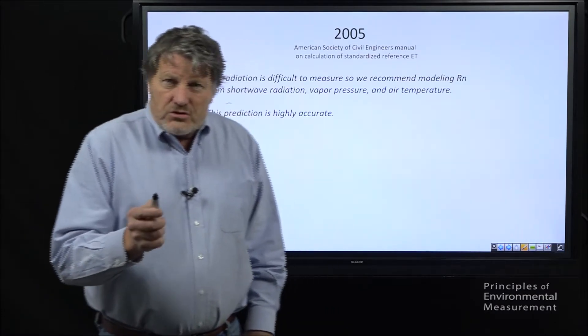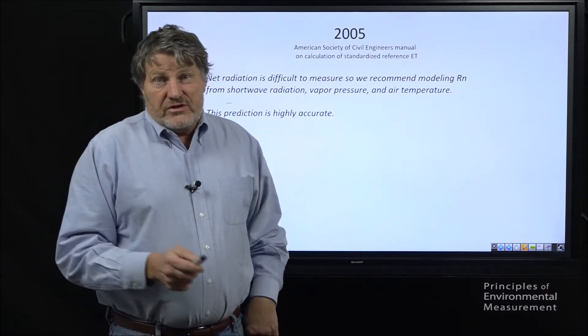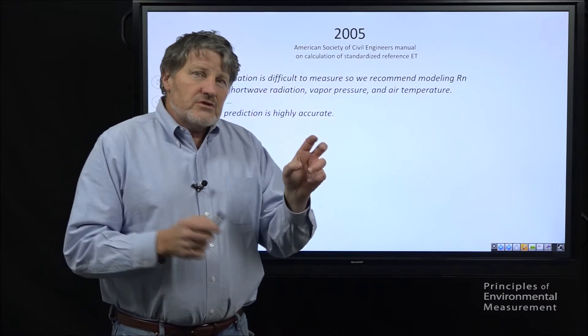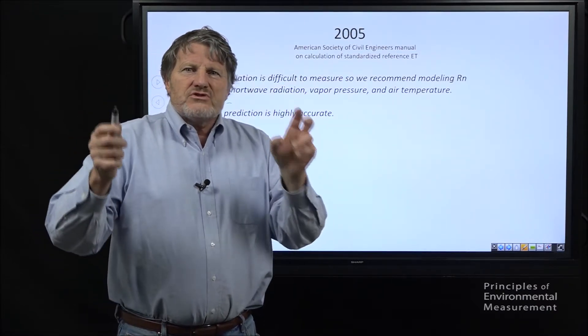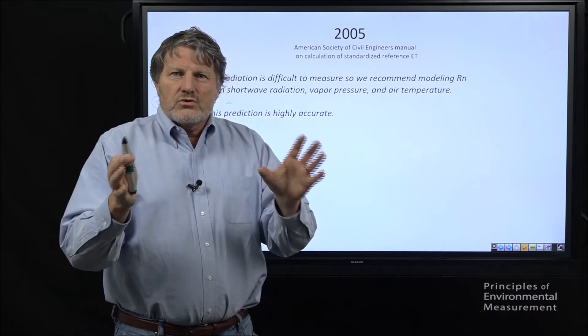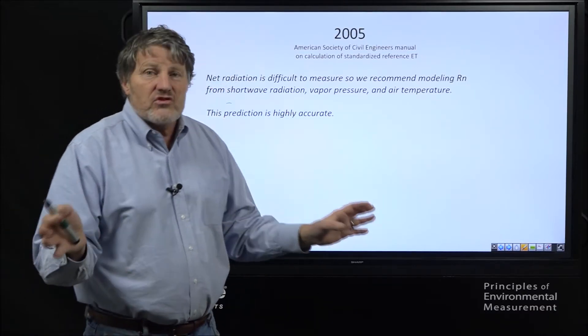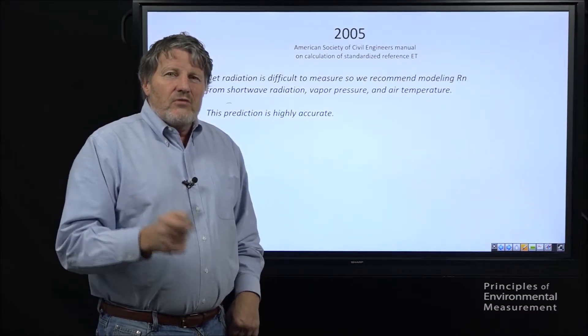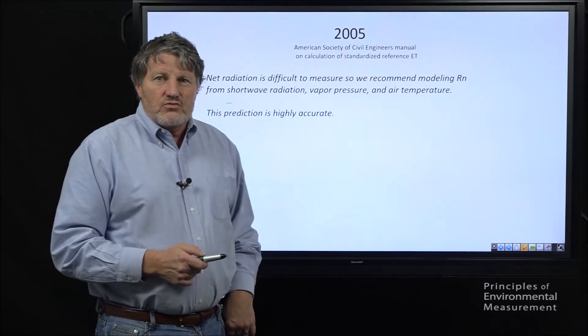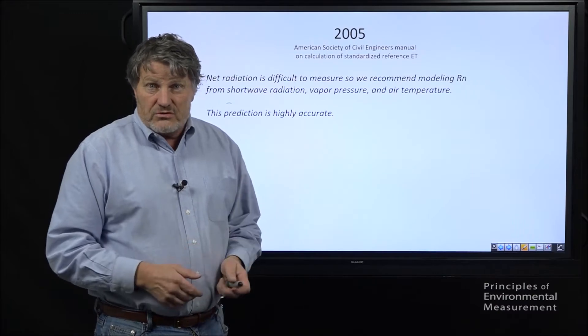So we measure, we model a lot of things in science. We model the things we have trouble measuring, but we co-evolve measurements and models to get the most accurate analysis of everything we do. I want to look in a minute at where we've come since this statement was written in terms of instruments to measure net radiation.